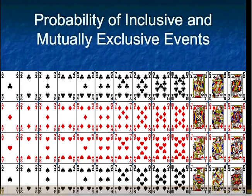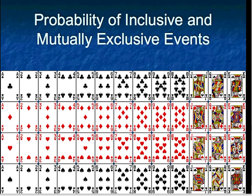Today we're going to learn about probability of inclusive and mutually exclusive events. To start off with, let's make sure that we all know what a standard deck of 52 cards looks like.